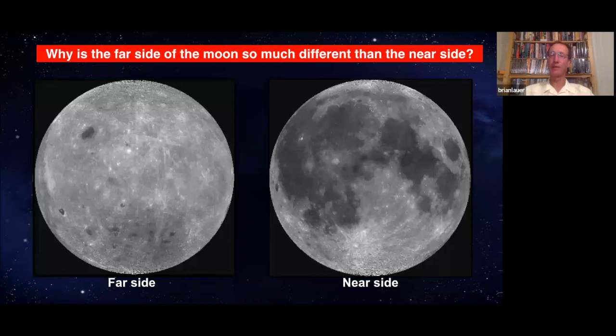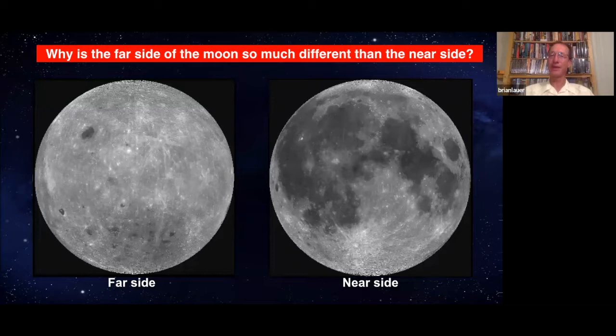Have you ever wondered why the far side of the Moon is different than the near side? I mean, the near side is dark - that's on the right side - and that dark stuff is lava flows.